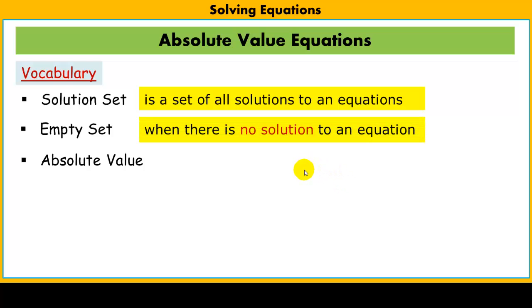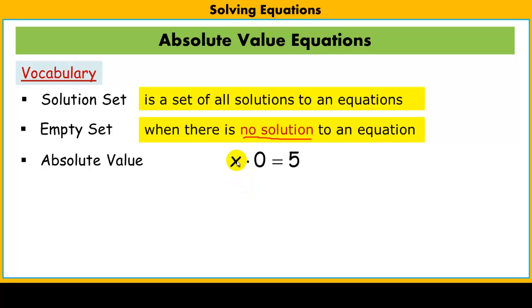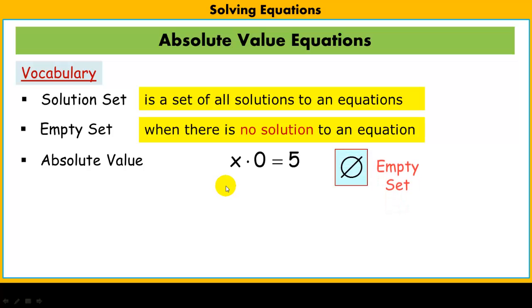What an empty set is: an empty set is a set where there's no solution — there is no value for the variable that would make it true. Here's an example of an equation that would have an empty set: x times 0 equals 5. There is absolutely no value for x that I could plug in here that can make this true. So we write an empty set as this symbol — a circle with a line through it — that means empty set.